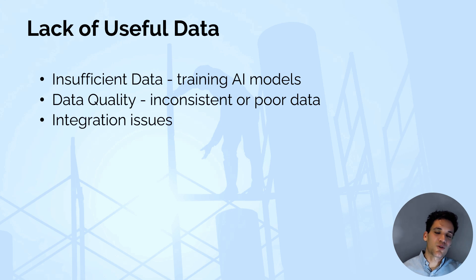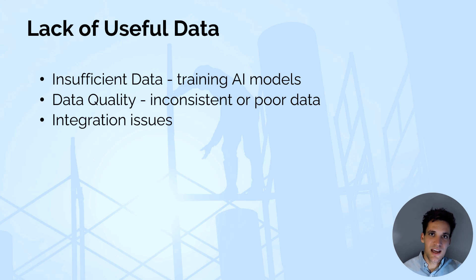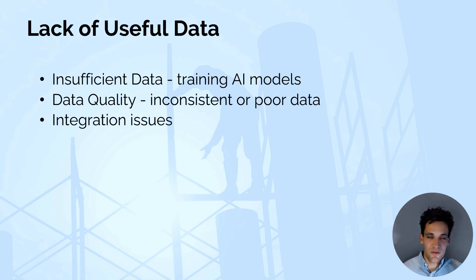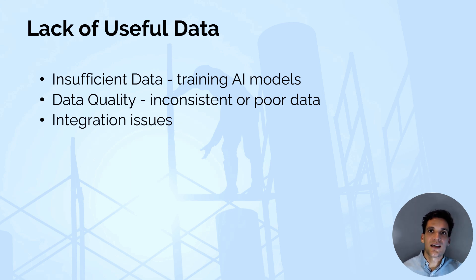The other issue is data quality. Data might be in the wrong format, it might not be measuring the specific thing we need, and we might not be able to map it against project outcomes. To train any generative AI like ChatGPT, we need to train it on a dataset and show it the trends in the data and how it maps to correct outcomes.